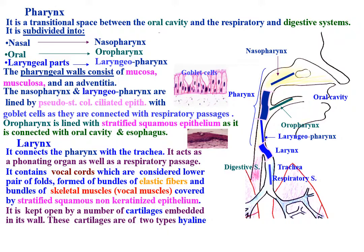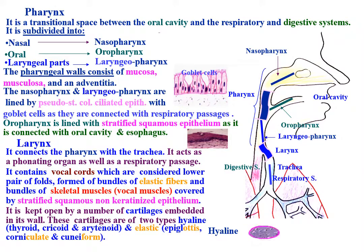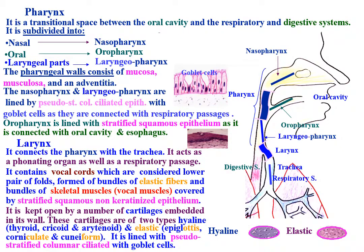The cartilages of the larynx are of two types: hyaline cartilage, such as the thyroid, cricoid, and arytenoid cartilages; and yellow elastic cartilage, such as the epiglottis, corniculate, and cuneiform cartilages. The larynx is lined with pseudostratified columnar ciliated epithelium with goblet cells.